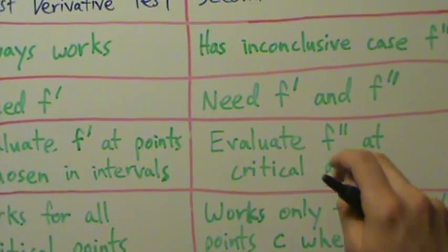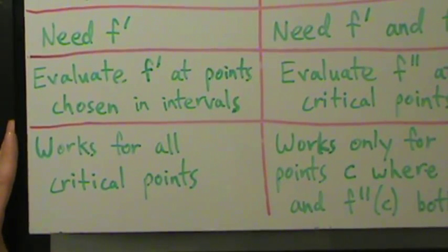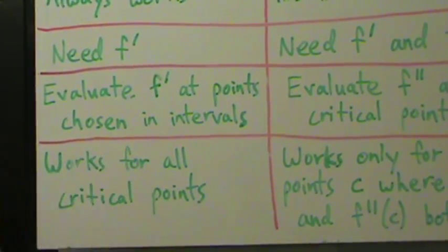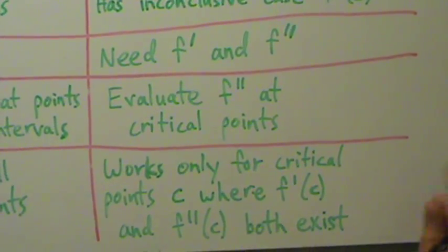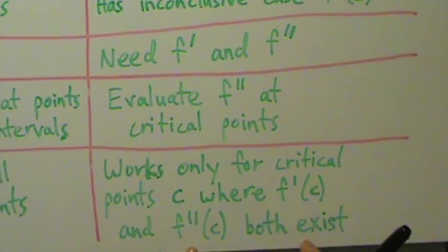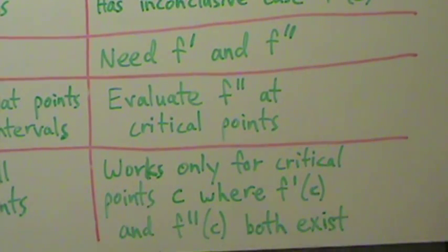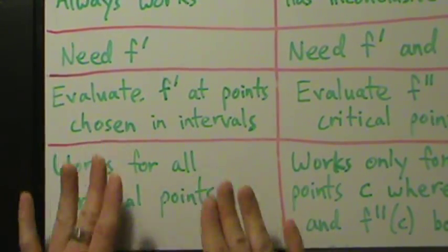That's a slight advantage for the second derivative test. Lastly, the first derivative test works for all critical points — any critical point where the derivative is zero or undefined. But the second derivative test only works for critical points c where both f prime of c and f double prime of c exist. That restriction — requiring both the first and second derivative to exist at the critical point — could be pretty big, depending on what you're doing. It's a fairly big advantage for the first derivative test.